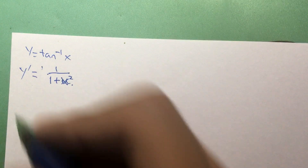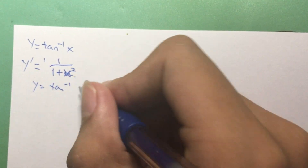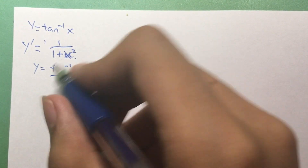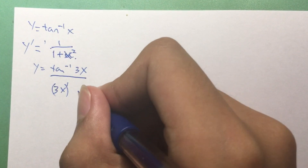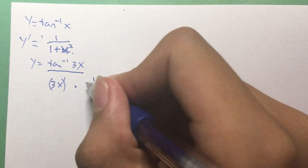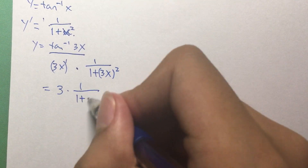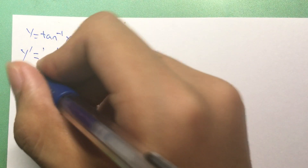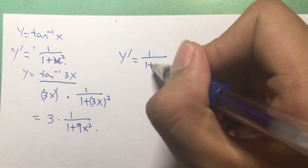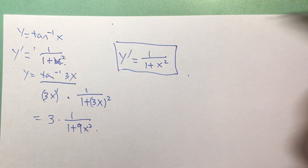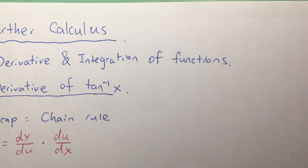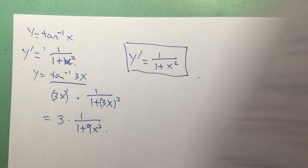So if you have y equals inverse tangent of 3x, first apply the chain rule to bring down the derivative of 3x at the front, then substitute x with 3x in the formula, giving 1 plus (3x) squared in the denominator. That equals 3 times 1 over 1 plus 9x squared, which matches what we derived. This confirms our formula: if y equals inverse tangent x, then y-dash equals 1 over 1 plus x squared.